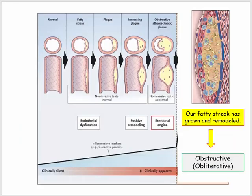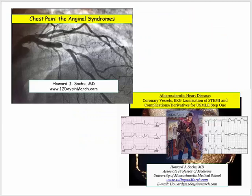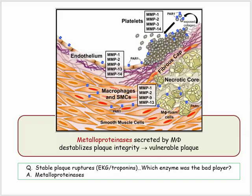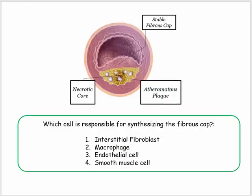This concludes the discussion of atherogenesis. Before closing, here are two common derivative test questions from Q-Banks and the NBME. The first describes an unstable patient with an ischemic EKG and elevated troponins, asking about the enzyme that predisposes to this clinical outcome — the answer is the matrix metalloproteinase, the key player in destabilizing plaques and causing rupture. The second question is a histology question asking which cell synthesizes the fibrous cap — it's tempting to choose the fibroblast, but the correct answer is the vascular smooth muscle cell.